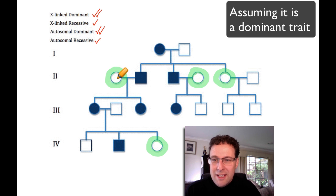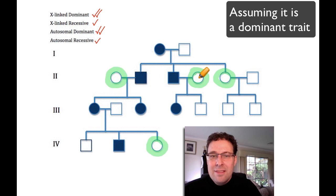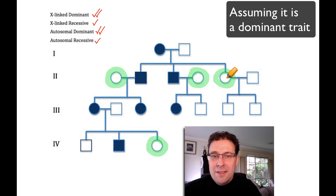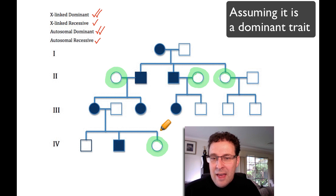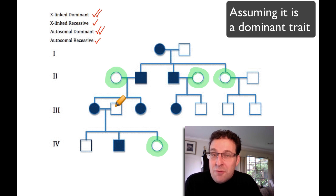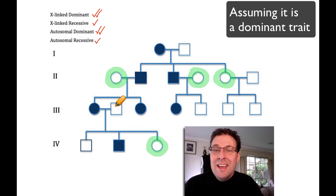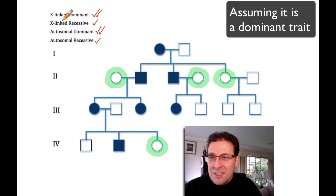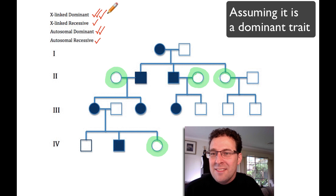Let's have a look. This girl here — we don't know what her father's like and she doesn't have any sons, so she's useless. This girl here has a son with the recessive phenotype just like she does. This girl with the recessive phenotype has a father with the recessive phenotype and two sons who both have the recessive phenotype. And this girl with the recessive phenotype also has a father with the recessive phenotype. So in answer to our second question, the answer is no. And so what that tells us is that if it's a dominant trait, it's very likely to be an X-linked dominant trait.